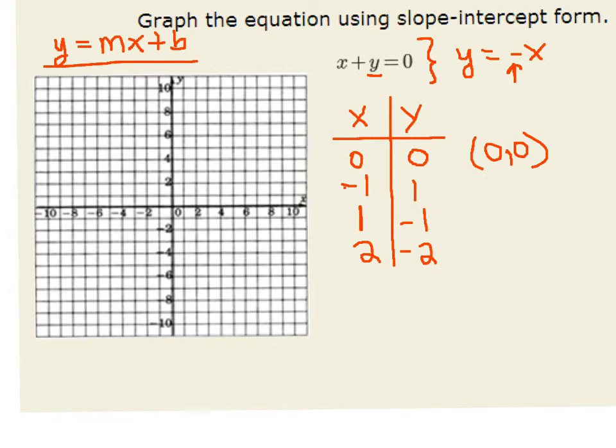We're going to plot our first one at (0, 0) right there. When x is negative 1, y is 1, so we go left 1 and up 1. When x is positive 1, y is negative 1, so we go right 1 and down 1.